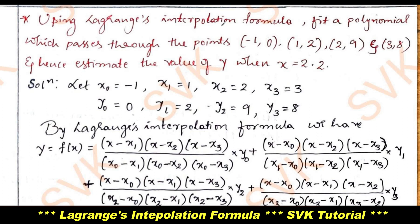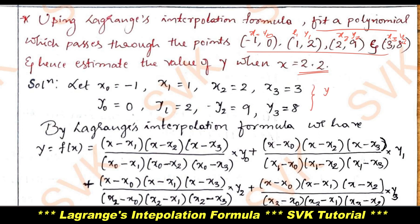In this problem, using Lagrange's interpolation formula, I need to fit a polynomial which passes through the points (x0,y0), (x1,y1), (x2,y2), (x3,y3), and then estimate the value of y when x equal to 2.2. So I note down x0, y0, x1, y1, x2, y2, x3, y3. First I need to find the polynomial equation, and then find y(2.2).